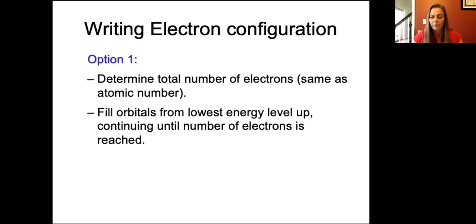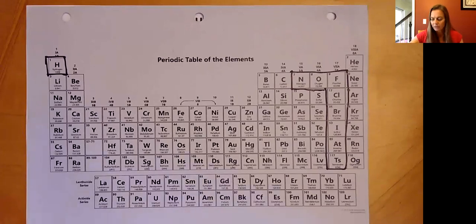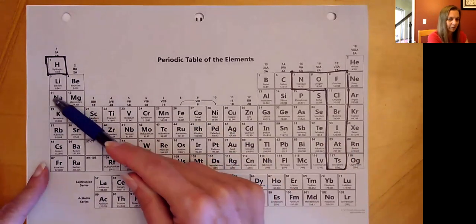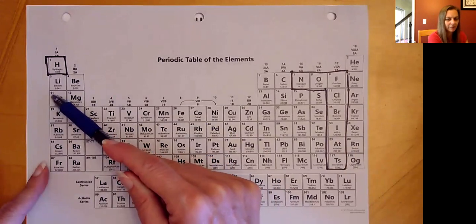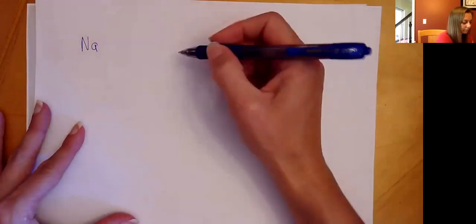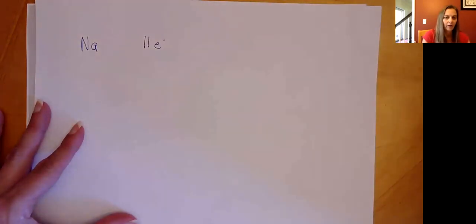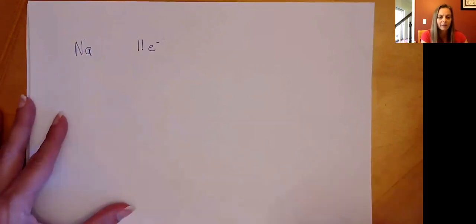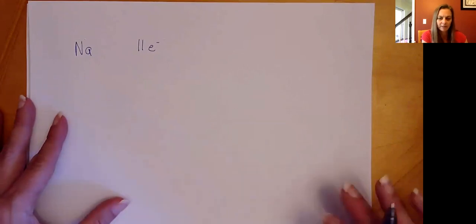Let's take a couple of examples. We're going to look at sodium first. Going to our periodic table, we can see sodium's atomic number, which tells us sodium has 11 electrons. We write ground state electron configurations, so electrons are always in the lowest possible energy level.